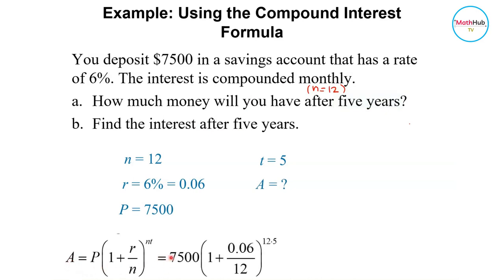And P is 7,500. And then R, that's the rate of 0.06 divided by 12. N is equal to 12. And then you have 12 times 5 here.